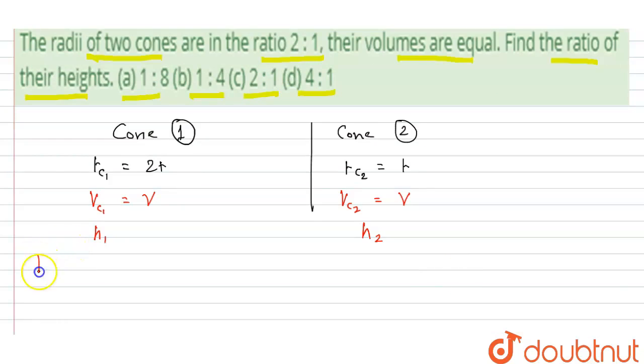The volume of cone 1 is given by (1/3)π(RC1)²h1. Similarly, the volume of cone 2 is given by (1/3)π(RC2)²h2.